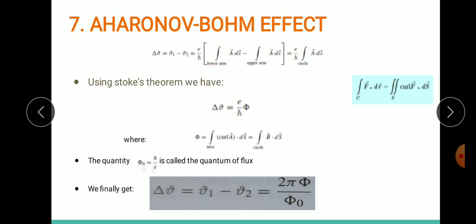Using Stokes theorem: ∮ f·dr = ∬ curl f·ds. Here instead of f we have A, so the equivalent is ∬ curl A·ds. Let me represent this as Φ. From which we get delta φ = (e/ℏ)Φ.